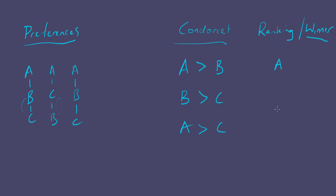A comes first as the Condorcet winner. Then, which should come second — B or C? Of B or C, which one wins in the Condorcet ranking? B does. So the result is A beats B beats C. That's Condorcet voting — it's very intuitive, and when it works, it gives very plausible results.